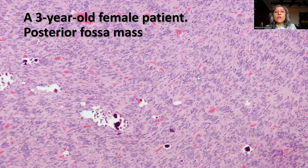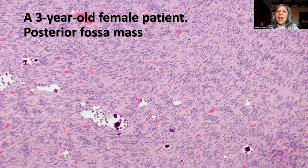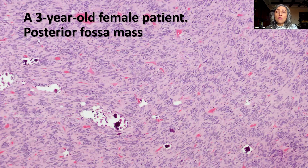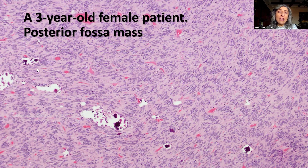This is a case of a three-year-old female patient who was found to have a posterior fossa mass that was resected. As you can see from the low-power magnification, this is a fairly cellular tumor with a proliferation of spindle to round blue cells, with scattered areas of calcifications and rich vascularity.